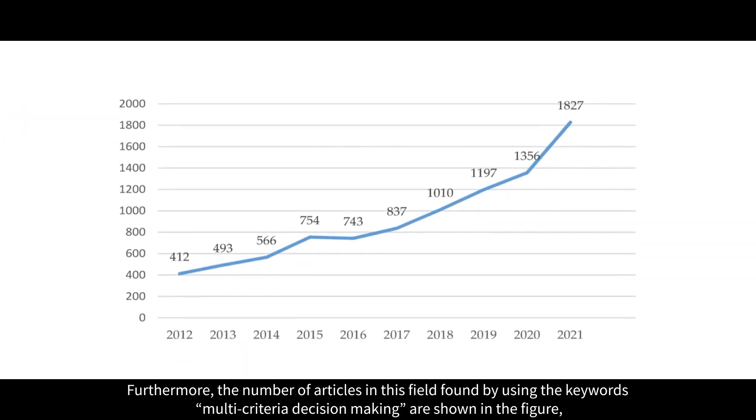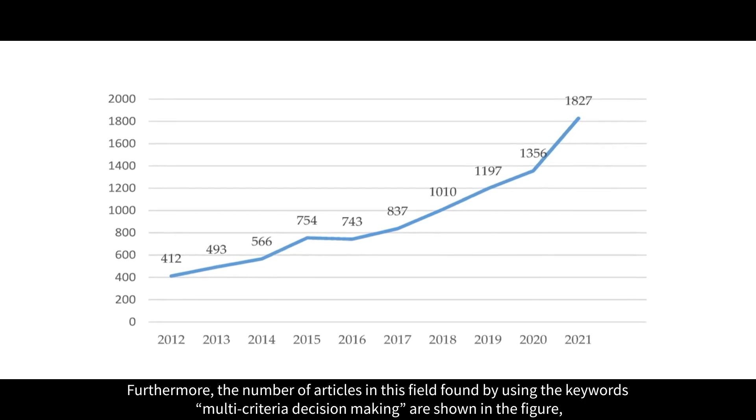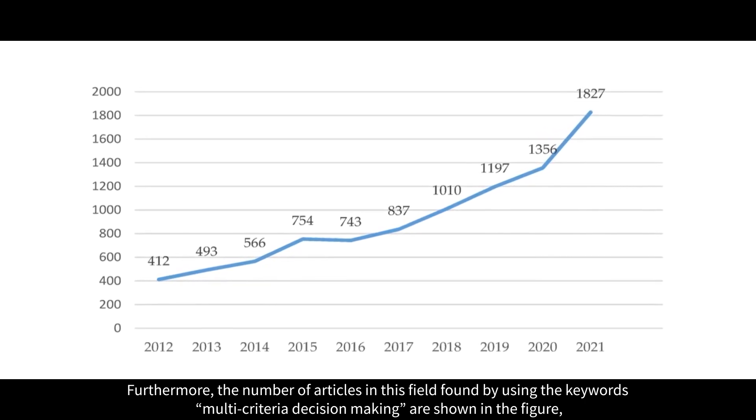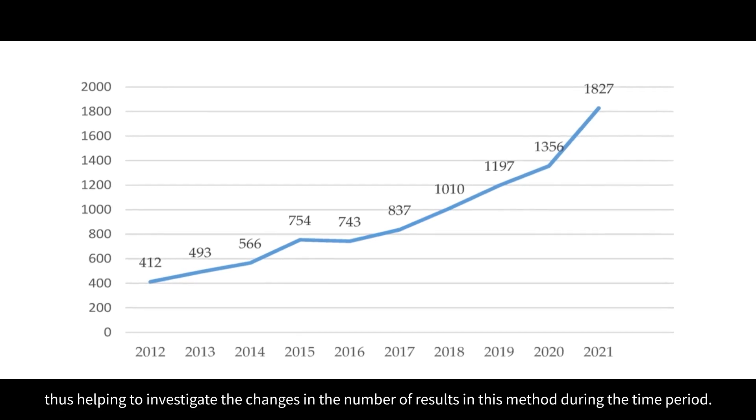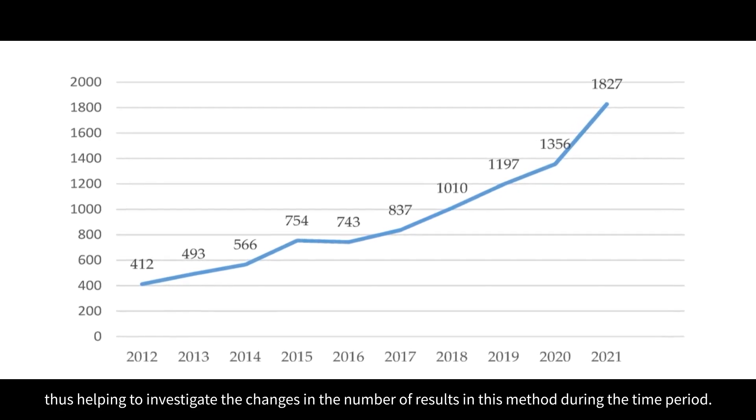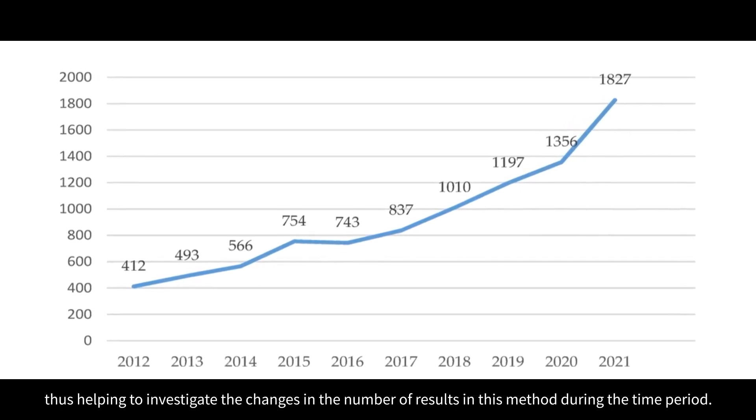Furthermore, the number of articles in this field found by using the keywords 'multi-criteria decision-making' are shown in the figure, thus helping to investigate the changes in the number of results and methods during the time period.